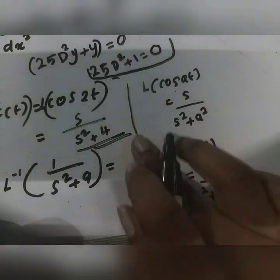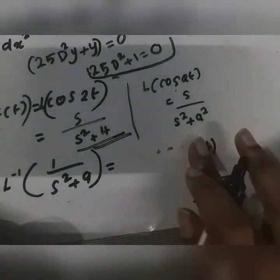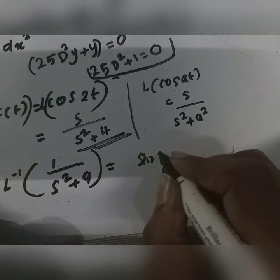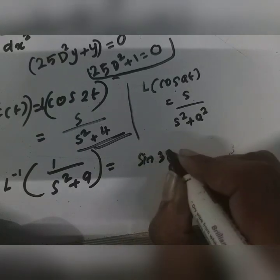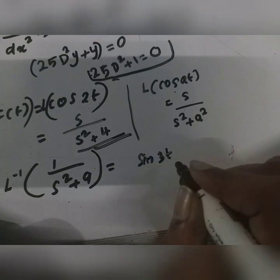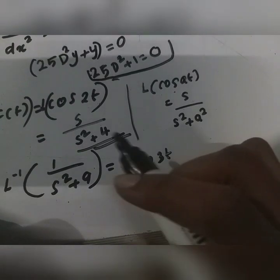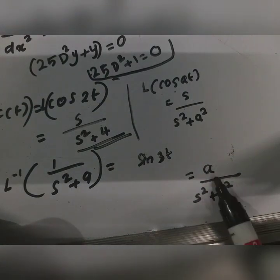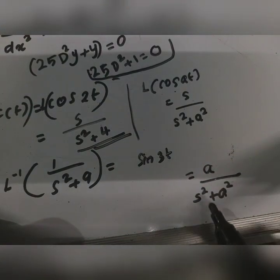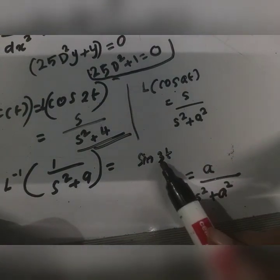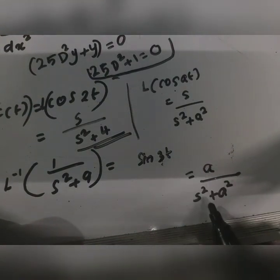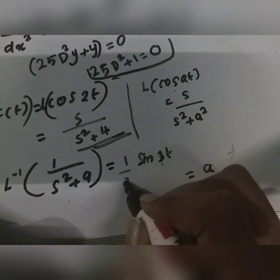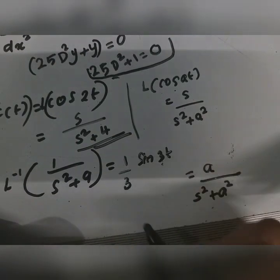The inverse Laplace gives sin(3t). The formula for inverse Laplace of a by s squared plus a squared is sin(at). We need to adjust the constant, so the answer involves 1 by 3 times sin(3t).